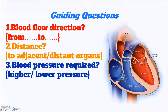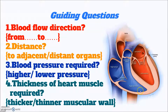After we know whether the blood needs to travel a longer or shorter distance, we can determine the blood pressure required. Higher blood pressure can push the blood to travel a longer distance. Then we consider the heart muscle thickness — thicker muscle wall can produce a higher blood pressure to make the blood travel a longer distance. That is the basic concept here.